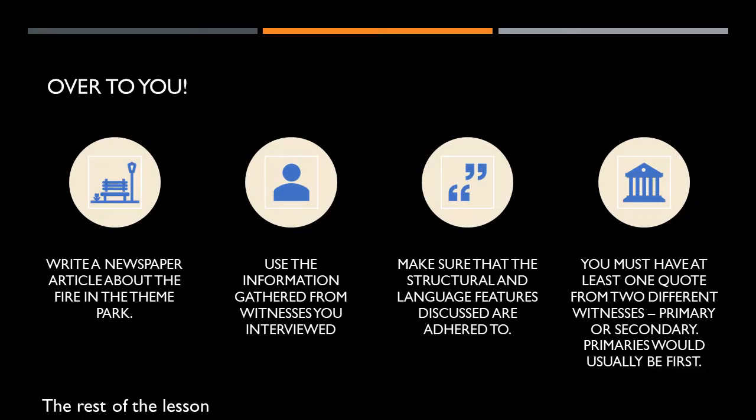And it's over to you now. You're going to be writing a newspaper article about the fire in the theme park, using the information gathered from the witnesses you interviewed. Make sure that the structural and language features discussed are adhered to. You must have at least one quote from two different witnesses — a primary and a secondary witness; primaries would usually come first. Do make sure you start with all the important information, then have the additional details, and then finish off with anything else you might want to add. Pause the video for the rest of the lesson to do your article now.